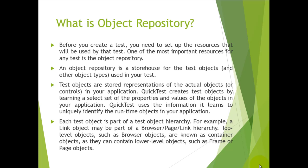During recording, QTP will learn the objects present on the screen. For example, if you are clicking on a button OK, QTP will gather information about that button and store it in the format of .tsr — test script repository. That is called object repository: a collection of all the objects and actions you do on the screen during recording.